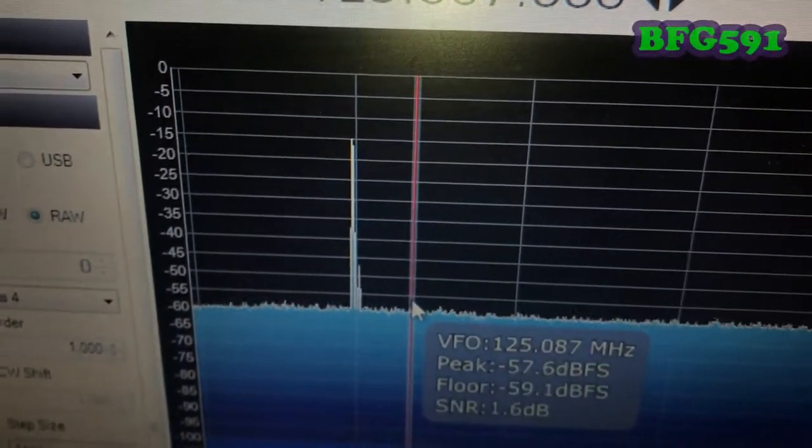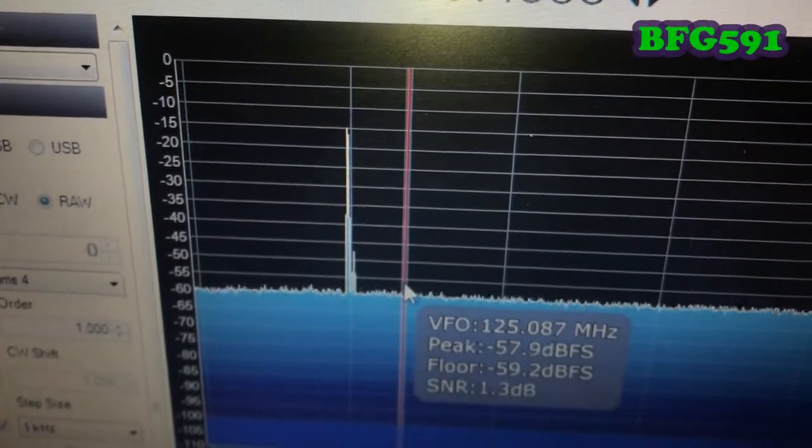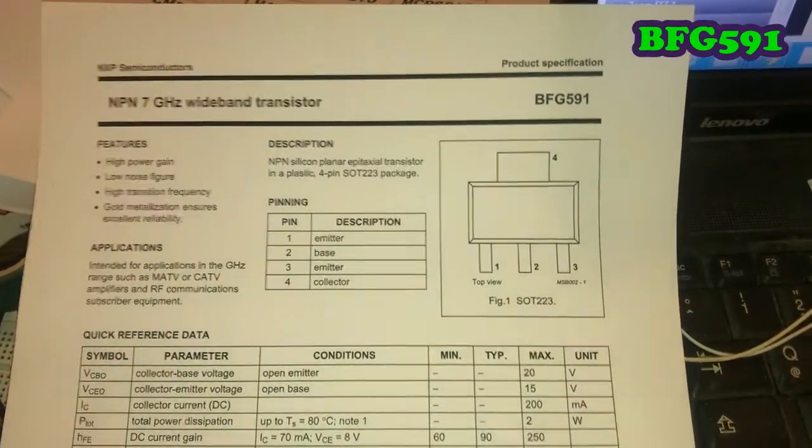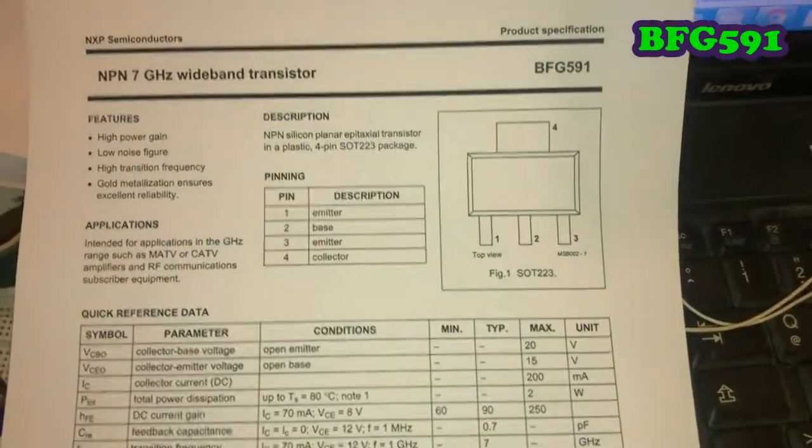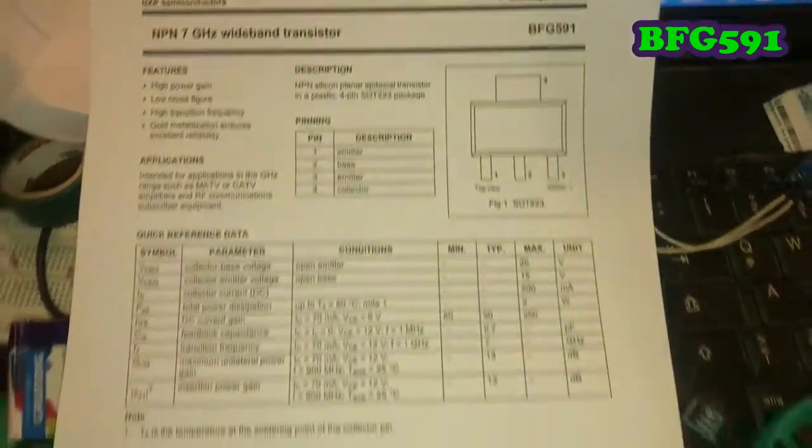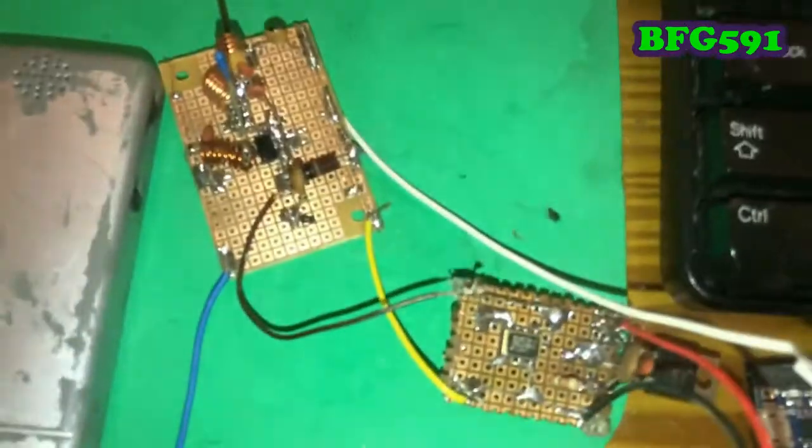This is one of the most simple transistors for super wideband amplification projects, the BFG591. Here is the wave source 125 megahertz oscillator.